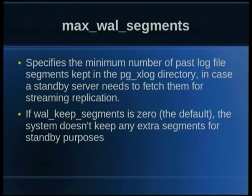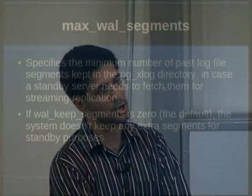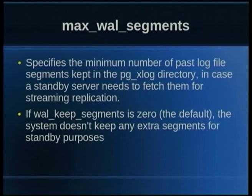Next is wal_keep_segments — also very important. If you're setting up hot standby, every time a new WAL log file is generated it ships across to the standby server. Setting it to zero can work, but if something goes wrong with a standby server and it goes offline, once you bring it back online you need those WAL log files for partial recovery. Setting it to zero is not really a good option. I generally go with around 100 WAL log files, which is about 1.6GB since each WAL file takes 16 megabytes, but set it according to your available disk space.